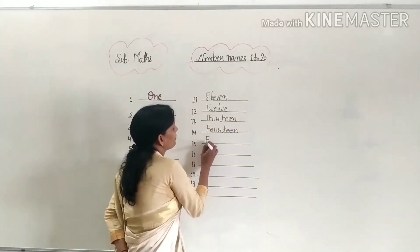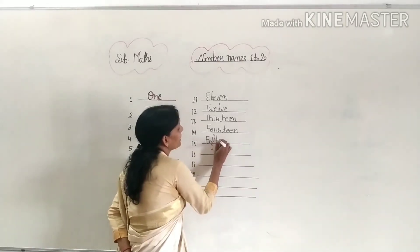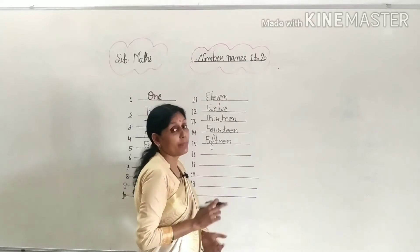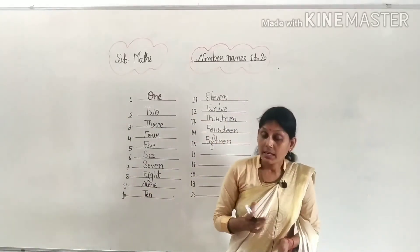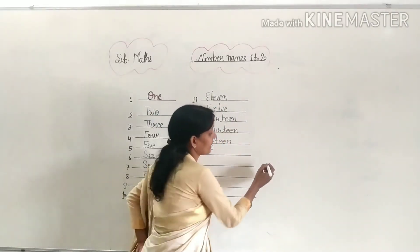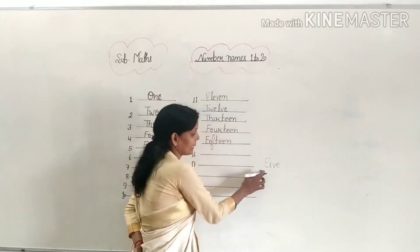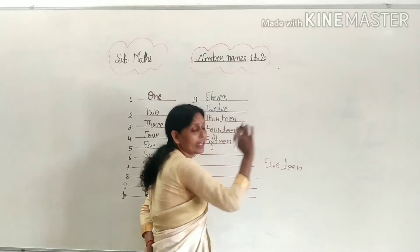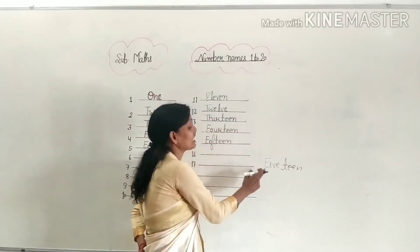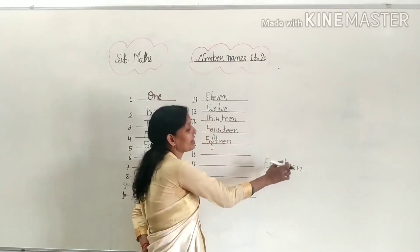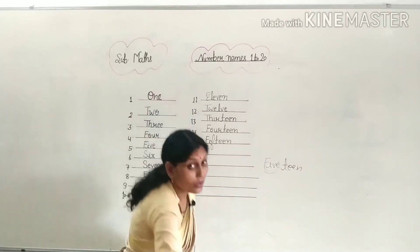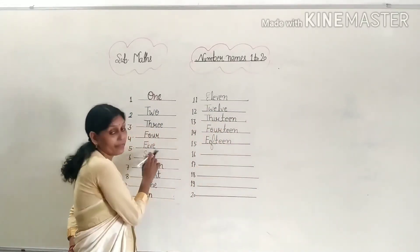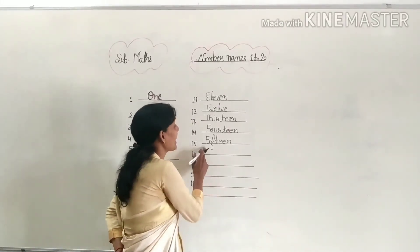Fifteen. F-I-F-T-E-E-N. The spelling of fifteen — students, mostly children write fifteen wrong. The reason is that when you write fifteen, you write the spelling of FIVE: F-I-V-E, and then T-E-E-N. But that is wrong. The spelling of fifteen is F-I-F-T-E-E-N, not F-I-V-E-T-E-E-N. Fifteen is F-I-F-T-E-E-N. Okay, clear?